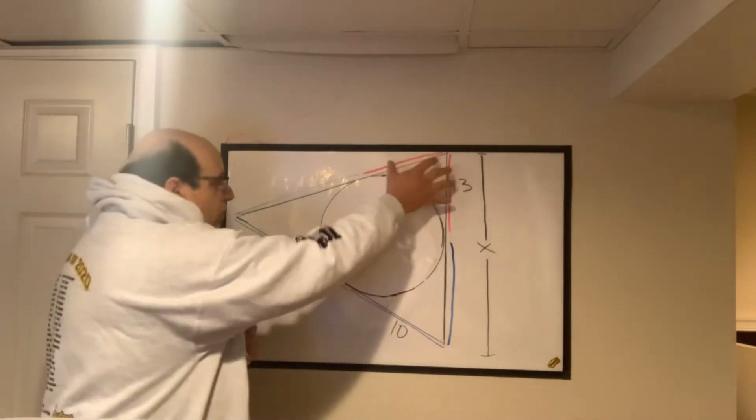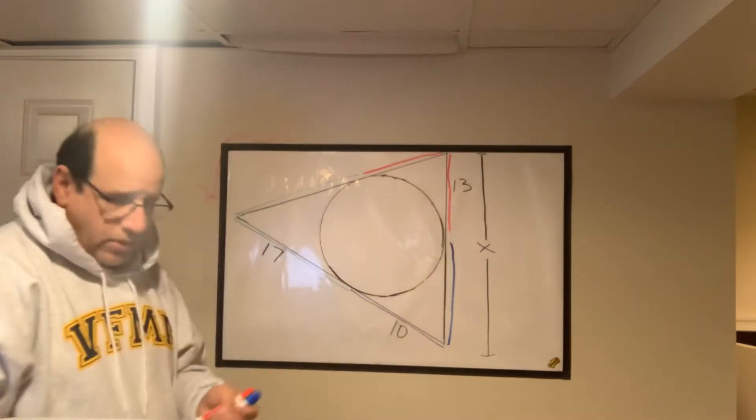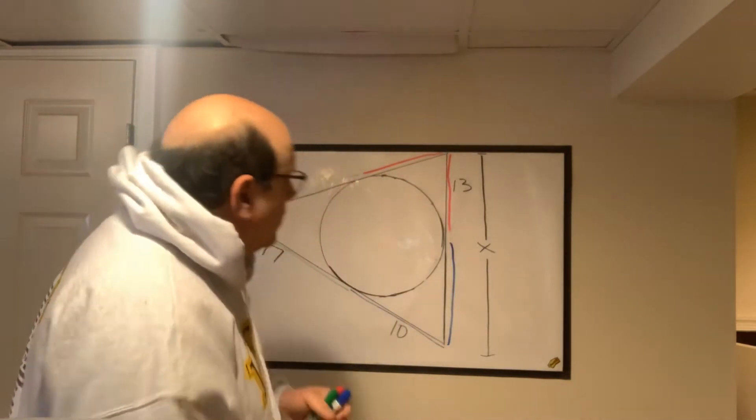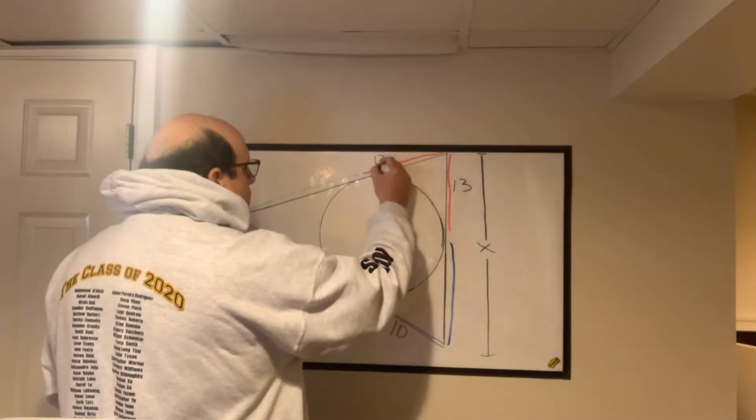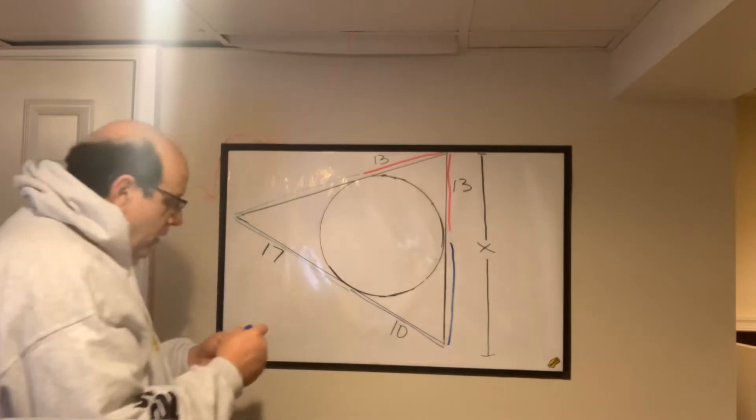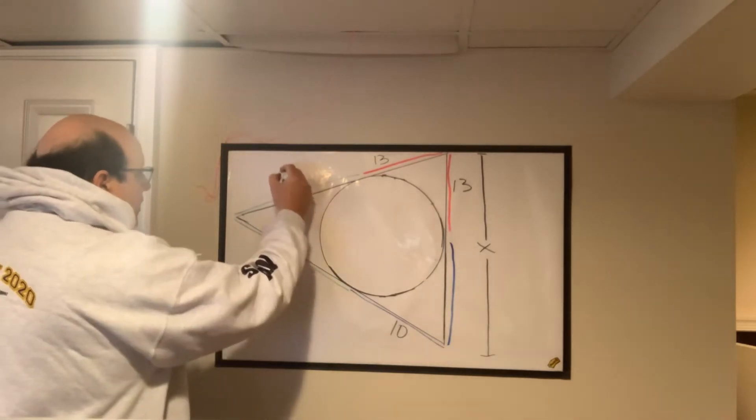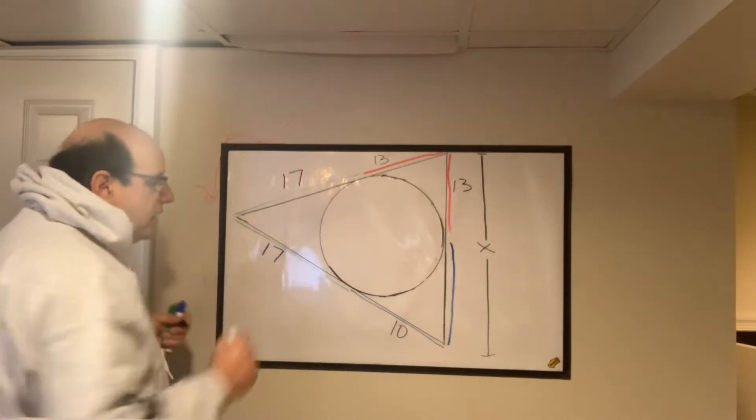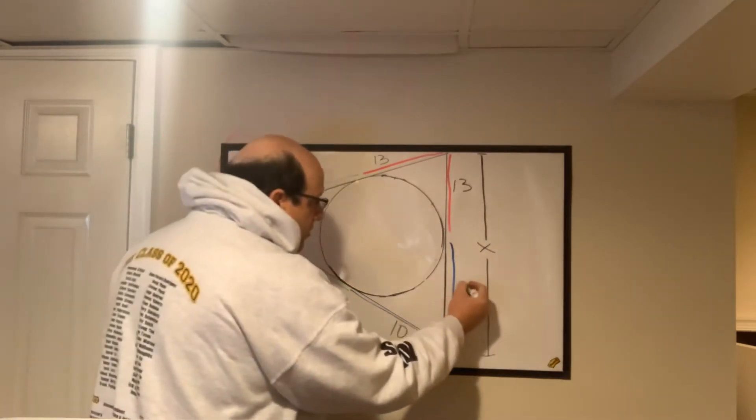So we have the two reds should be congruent. So therefore, this up here is 13 as well. I'll come out to the greens. If this is 17, then this long one has to be 17. And last but not least, if this is 10, then this has to be 10.